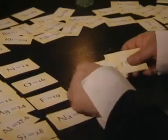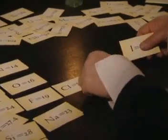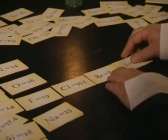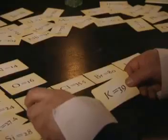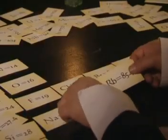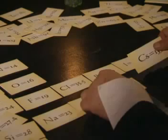One group was the reactive non-metals: fluorine, chlorine, bromine and iodine. Another group was the reactive metals: sodium, potassium, rubidium and caesium.